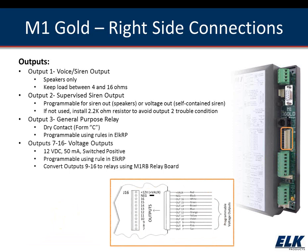A ribbon cable connects to the panel providing 12-volt 50-milliamp outputs on outputs 7 through 16. If you need more relays, the M1 has a relay-specific board, the M1RB, that can take outputs 9 through 16 and turn those into relay outputs, allowing you to start controlling a lot of things.